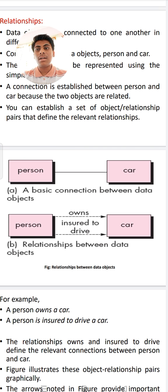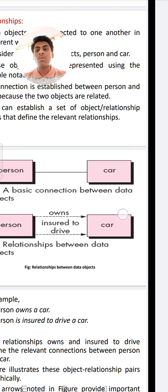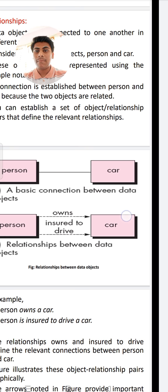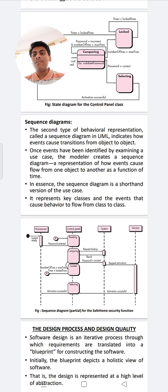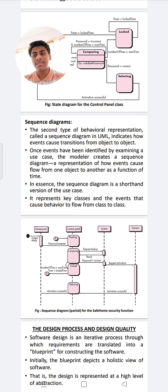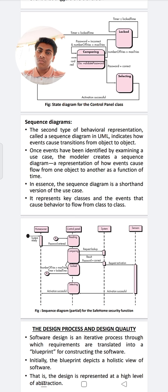Next, creating a behavioral model. The behavioral model indicates how software will respond to external events. To create a model, we should follow these steps: evaluate the use cases to fully understand the sequence of interactions within the system; identify the events that drive the interaction sequence; understand how these events relate to specific objects; create a sequence diagram for each use case; build a state diagram for the system; and review the behavioral model to verify consistency.